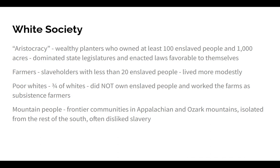Below the aristocracy were farmers — slaveholders with fewer than 20 enslaved people — who lived much more modestly than the wealthy planters. At the bottom, comprising three-quarters of all whites in Southern society, were the poor whites, who did not own enslaved people and worked subsistence farms. At the very edges of Southern society were frontier communities in places like the Appalachian and Ozark Mountains — isolated areas that often had mixed or even negative opinions on slavery, sometimes seeing it as competition for jobs.